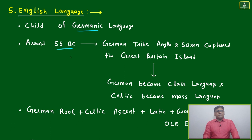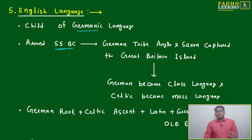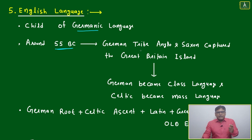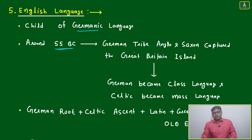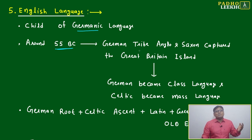Just a small story to understand why English is Germanic — why we can say the root of English is Germanic. Around 55 BC, Germanic tribes were very developed. Whatever tribe was living in the Germany area, they were very advanced in war fighting. They were using some advanced technology or superior methods compared to other people.